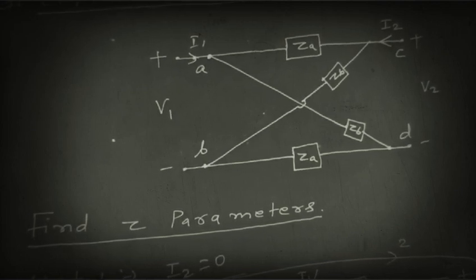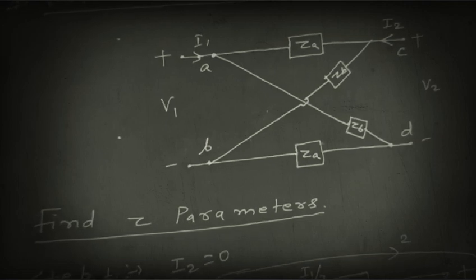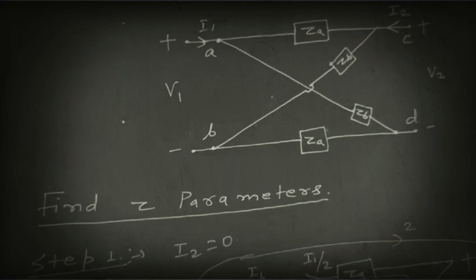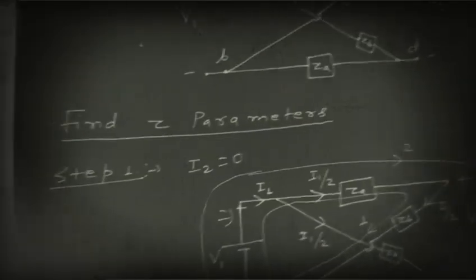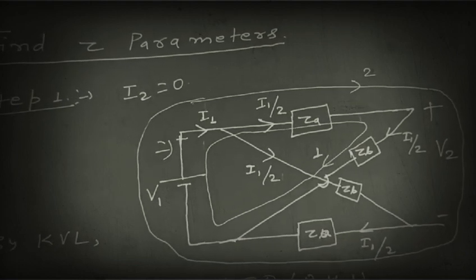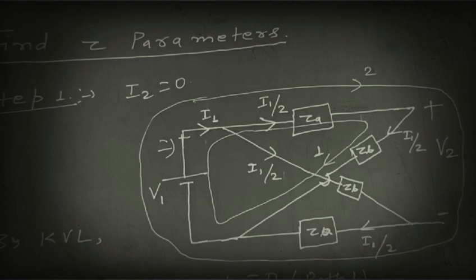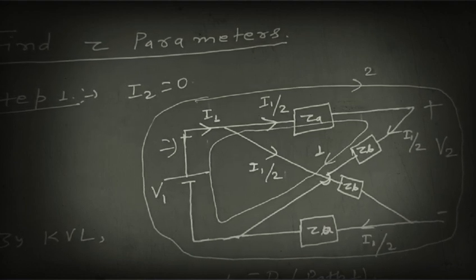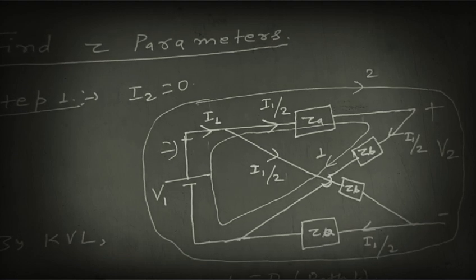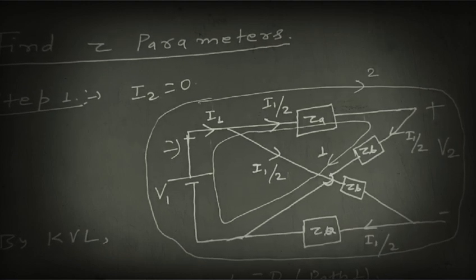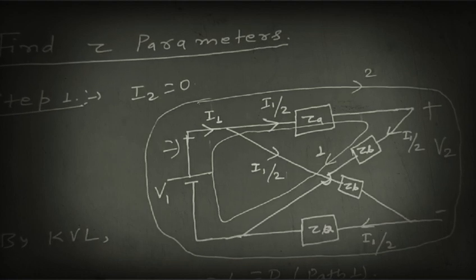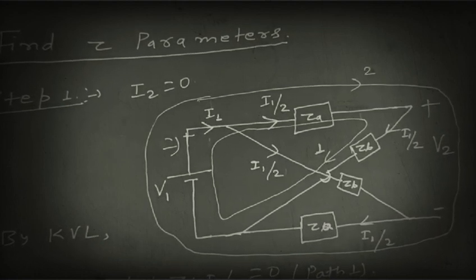Now we have to find the Z parameters of this lattice network. To find the Z parameters, the first step is to make I2 equal to zero. We then reconstruct the network accordingly. We will find the relation between V1 and I1, and the relation between V2 and I1, to find the network parameters Z11 and Z21.